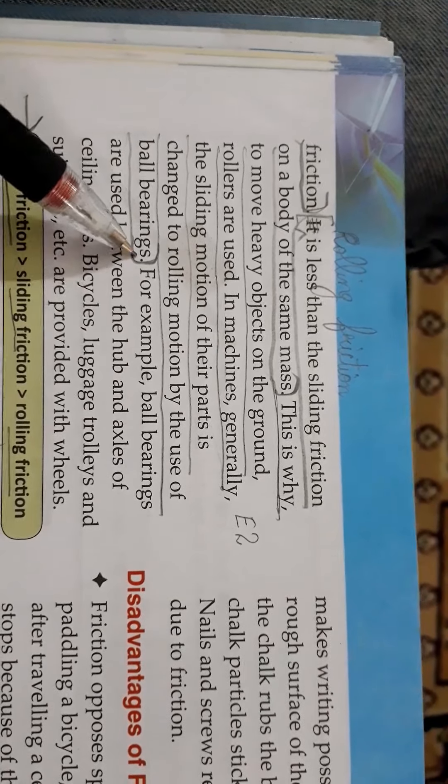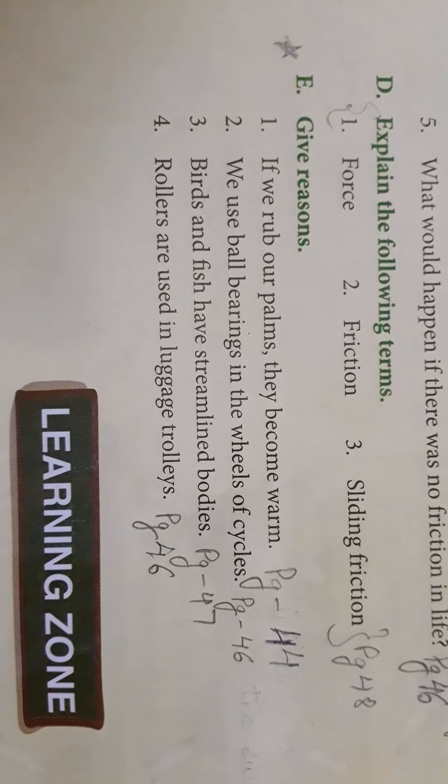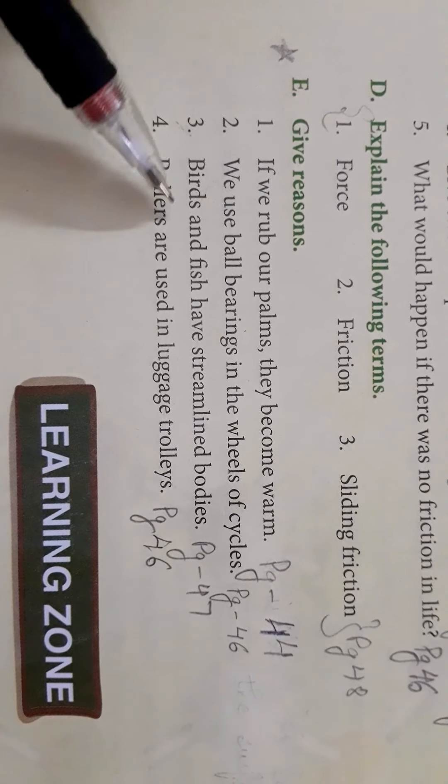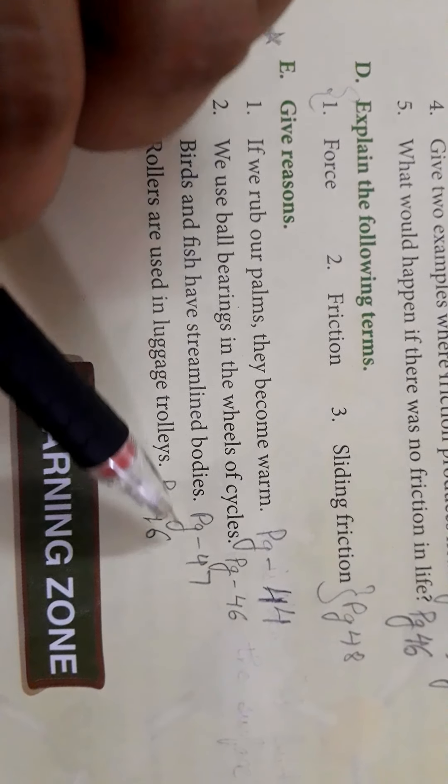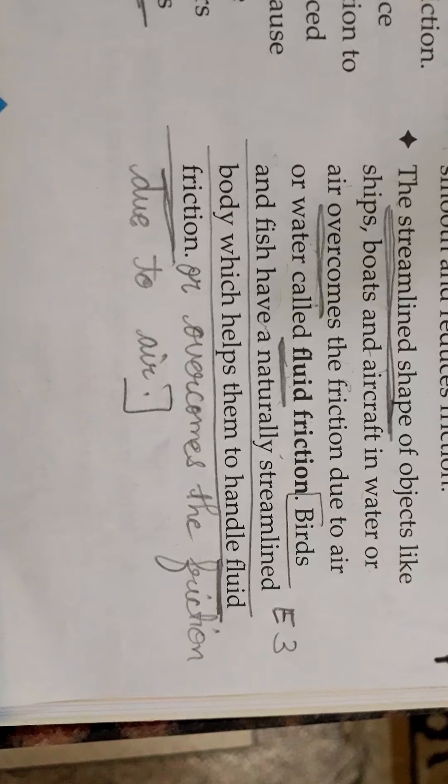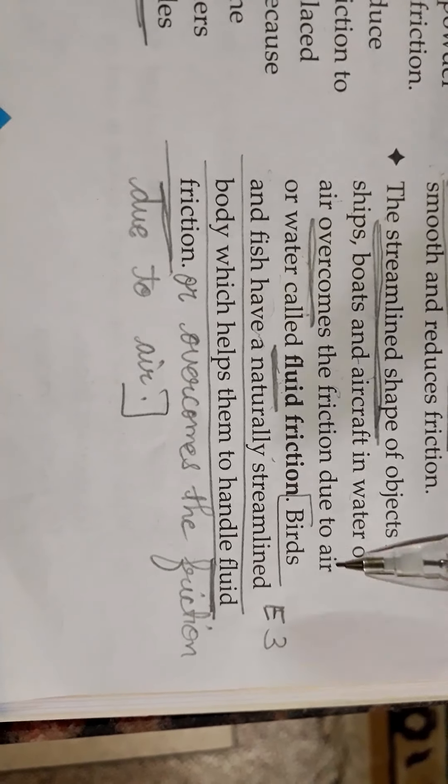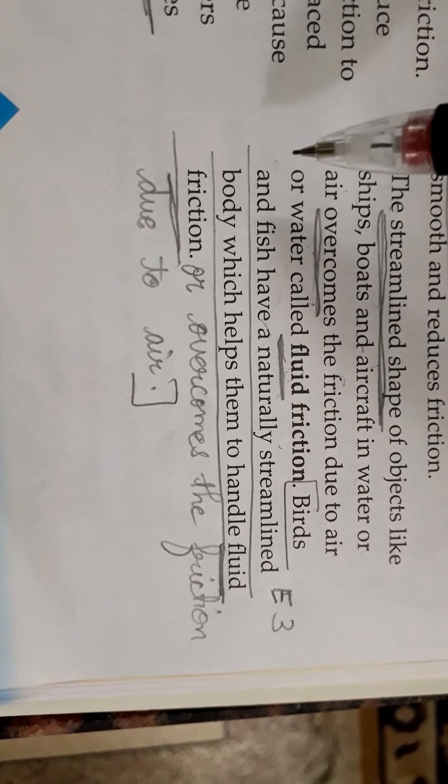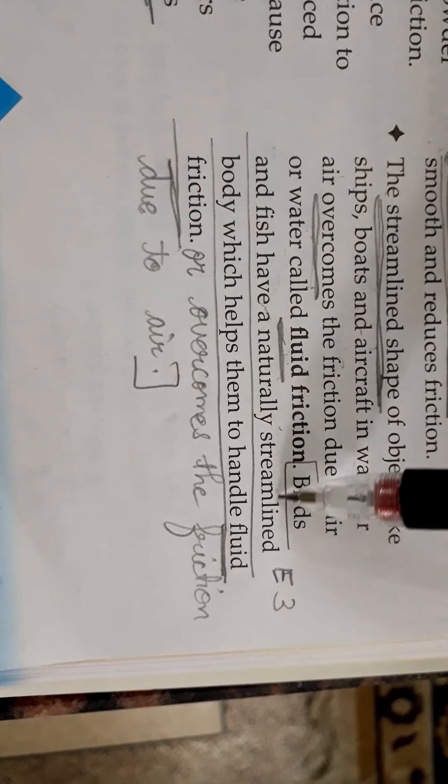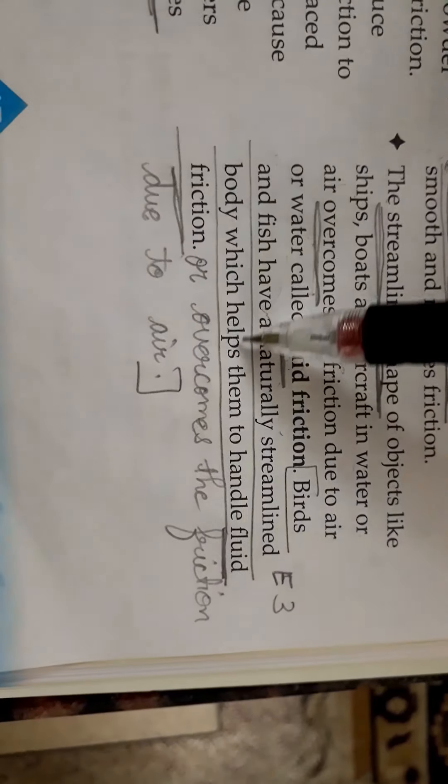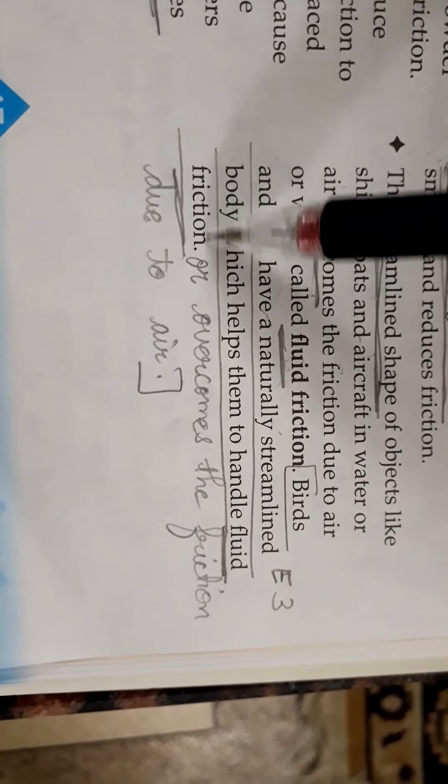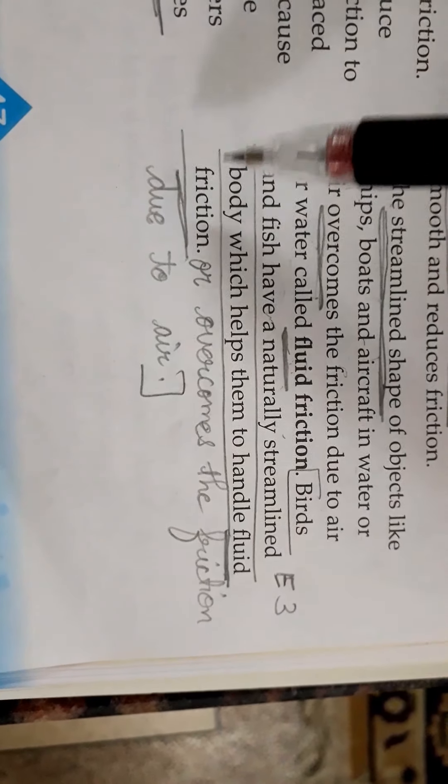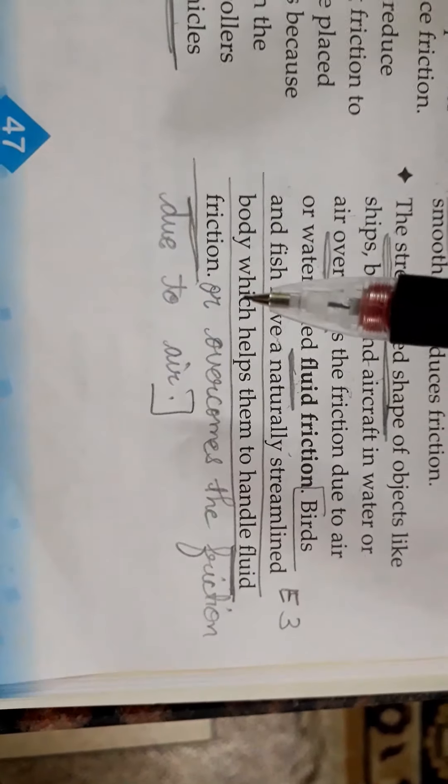Now the third one: birds and fish have streamlined bodies, page number 47, on the bottom of the page. Birds and fish have naturally streamlined bodies which helps them to handle the fluid friction or overcome the friction due to air.